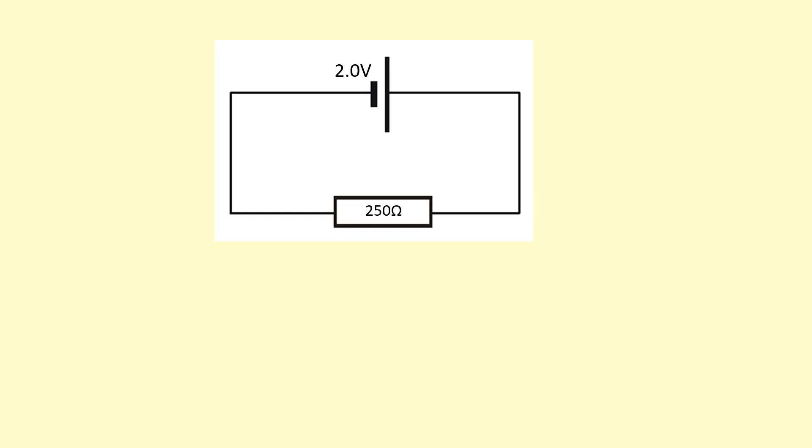How do we calculate the current when the potential difference and resistance is known? We can use Ohm's law. As an equation, Ohm's law looks like this: V equals IR.